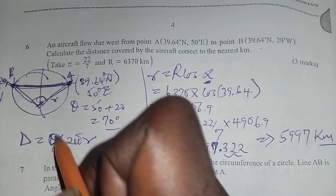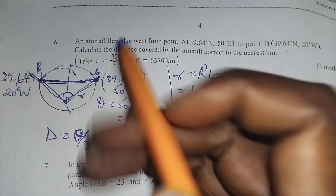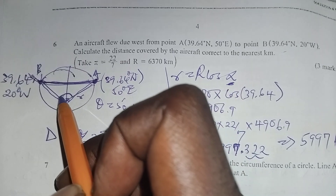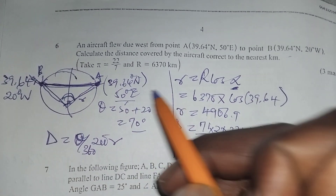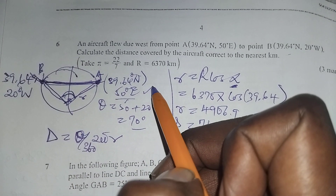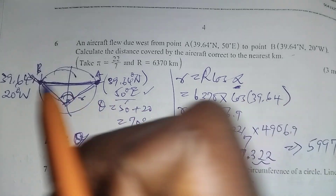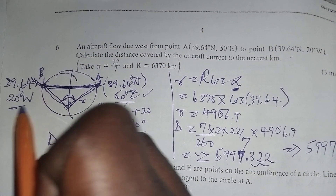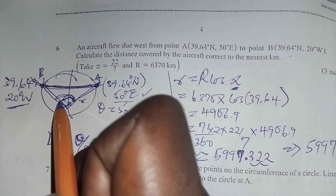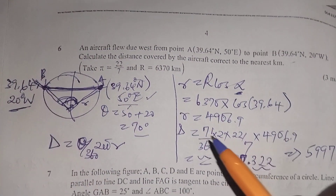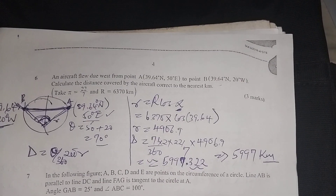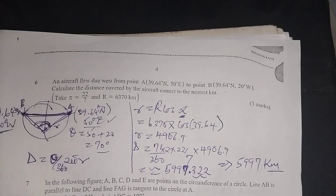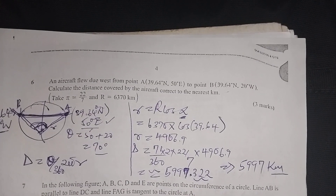This angle theta — you have to understand that the aircraft was at 50 degrees east and went to 20 degrees west, so the change in that angle is 50 plus 20, which is 70 degrees. Up to that point you have your three marks.